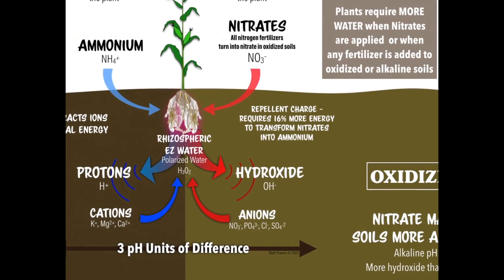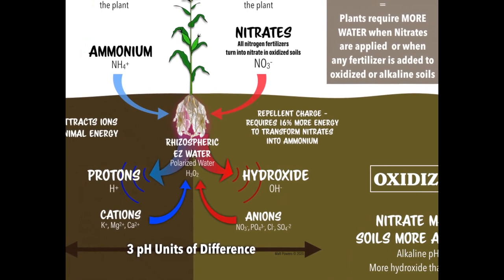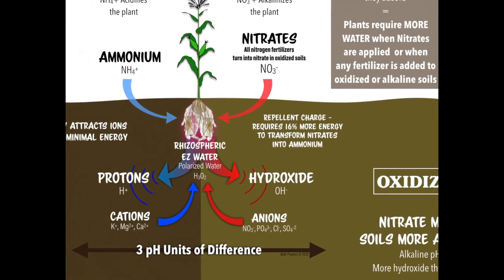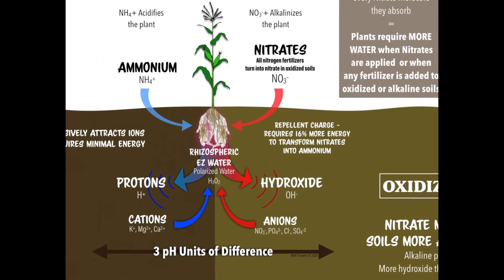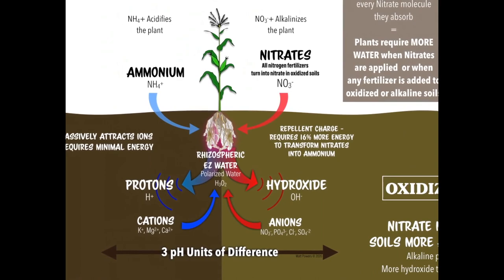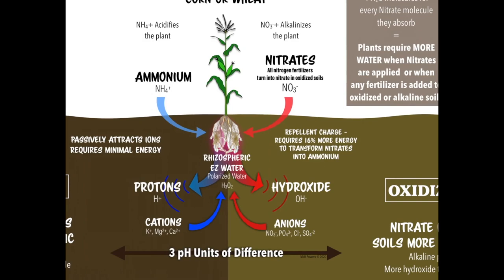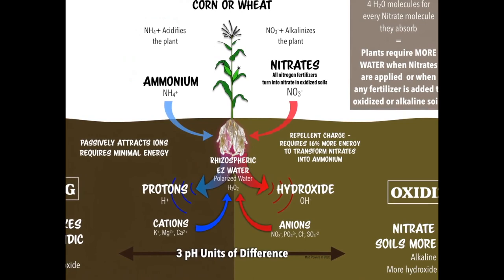Plants that are stressed are calling those pests in from kilometers away, like an antenna. These nitrates stand out in the infrared — very visible, very stark — and the plants send out a signal, according to research from Philip Callahan. These stressed plants are calling down pests to take them out of the ecosystem because they're doing harm to it. It's incredibly important that if we have alkaline, oxidized soils, we fix them first before adding fertilizer.